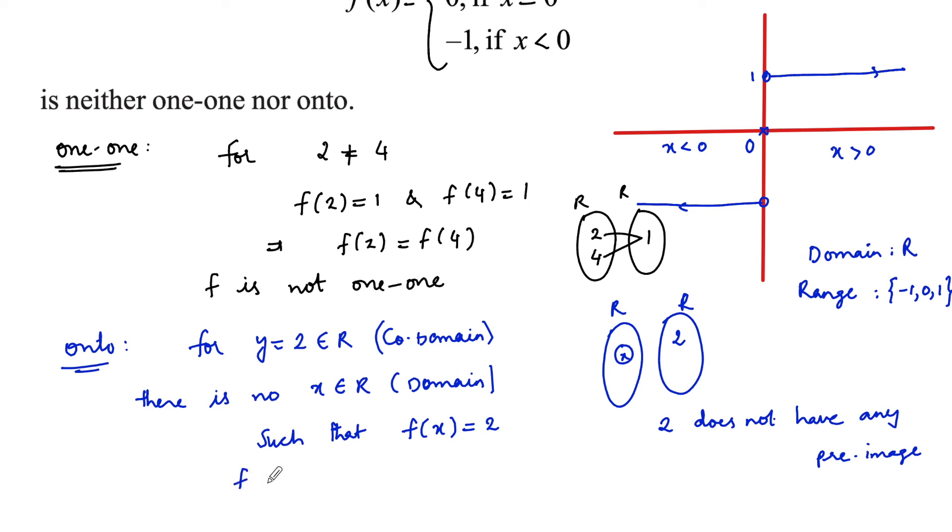Hence we can say that f is not onto. Therefore f is neither one-one nor onto.